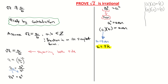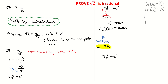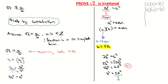Let's go back to 2b² = a² and substitute in a = 2k. That gives us 2b² = (2k)², which expands to 2b² = 4k². Dividing both sides by 2, we get b² = 2k². Again, 2 times a number must be even, so b² is equal to an even number.